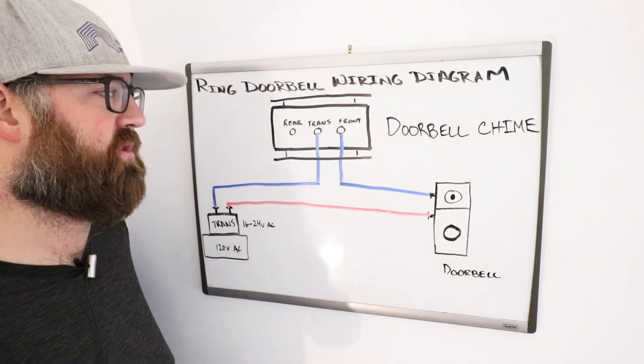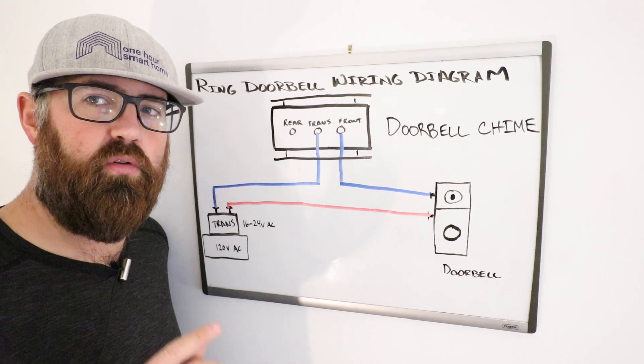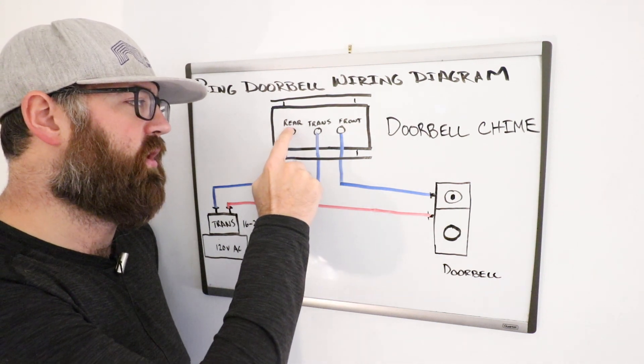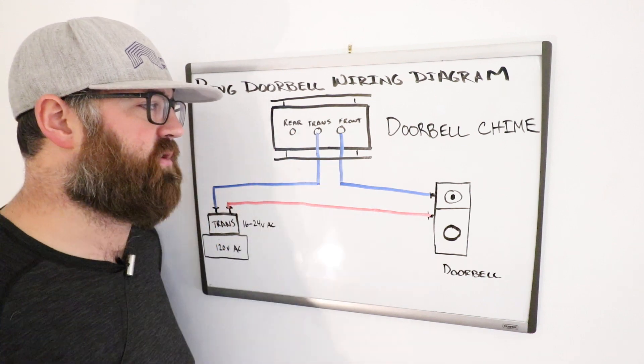And the rear is usually left off because that would be if you have two doorbells. If you've got one in your front and in your rear, then that rear would go from the rear out to the doorbell chime.